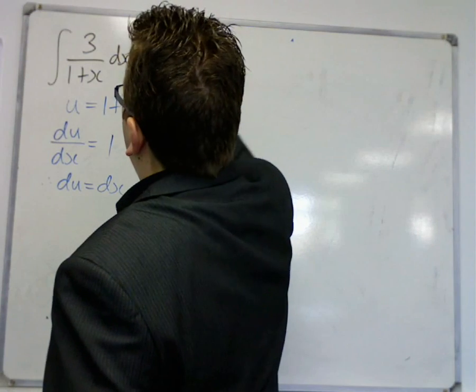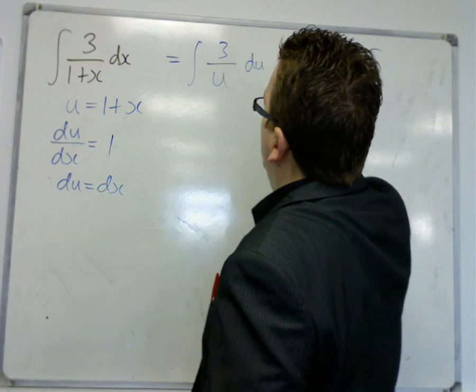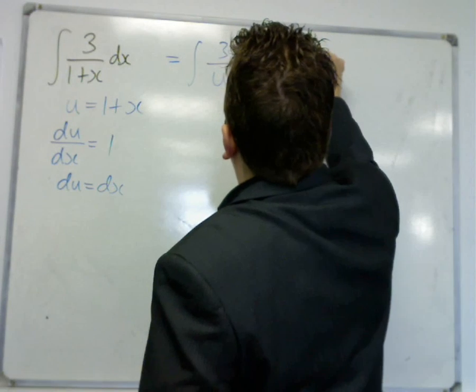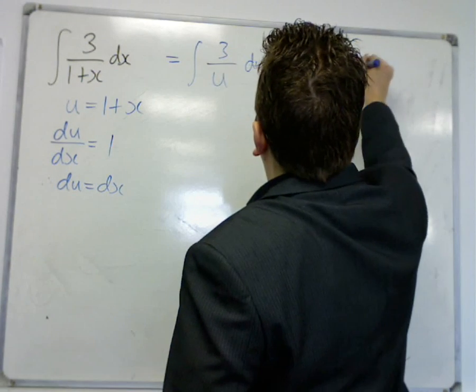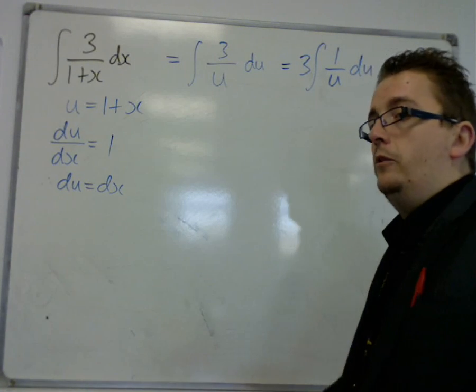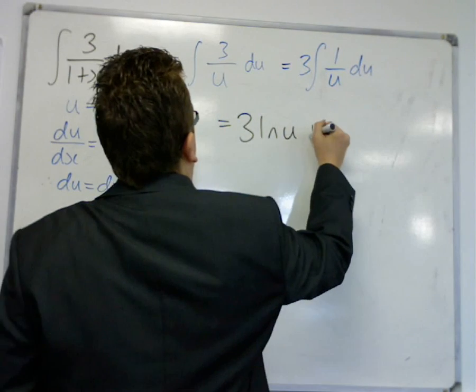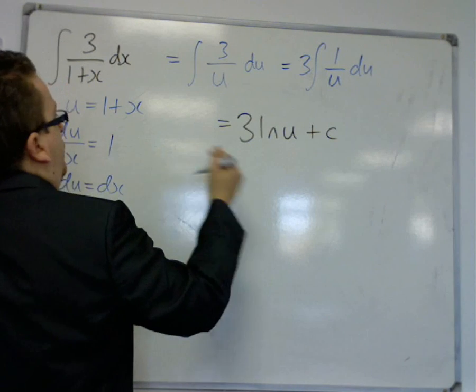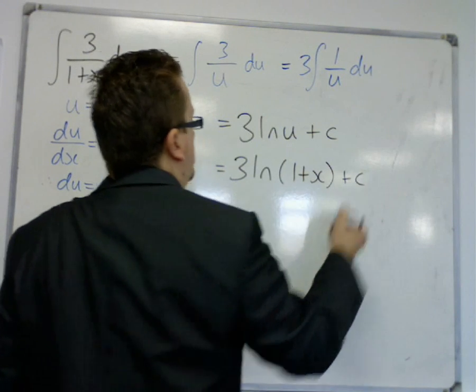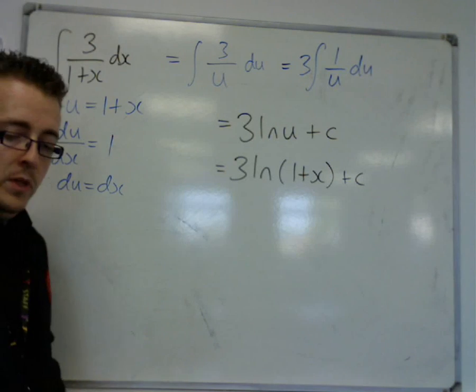So, the 1 over x becomes u. The dx can become du. Now, I'm going to pull the 3 outside of the integral sign. And 1 over u du is an integral that you should remember as being log u. So, this is 3 log u plus c. Now, u was 1 plus x. So, this is 3 log of 1 plus x plus c.